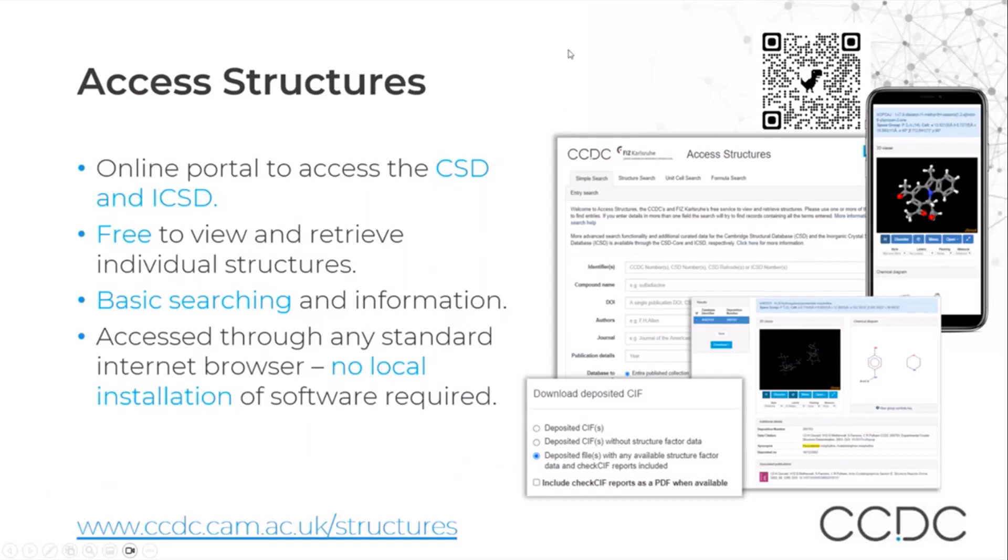Starting from access structures, this is the online portal that gives you access to the CSD and the ICSD, and you can find the link at the bottom of the slide. It is free to view and retrieve individual structures through access structures, and you can do some basic searching for information. You can access it through any standard internet browser, and as we said, you do not need to install any software.